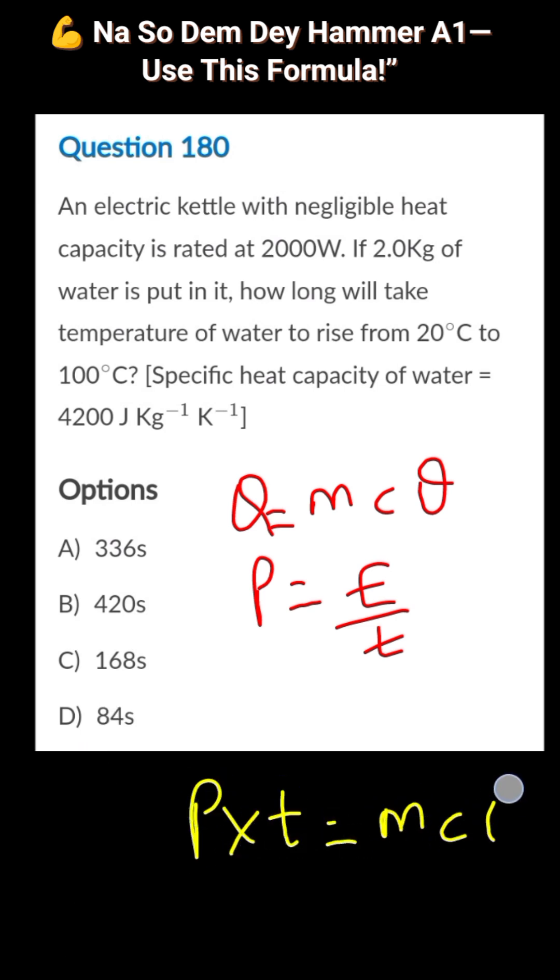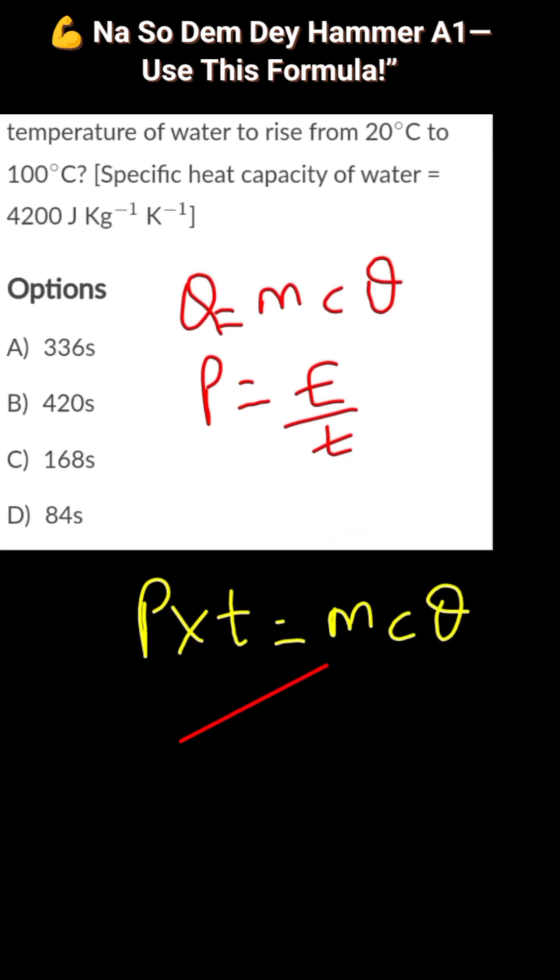Definitely you can write power times time will give you m c theta. Now what is this m? This m is the mass. This c here is the specific heat capacity. Theta is the temperature change.